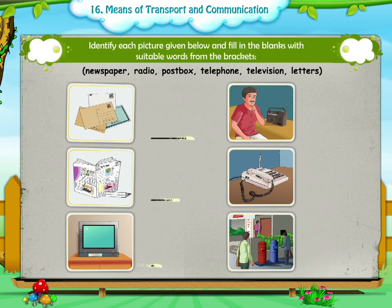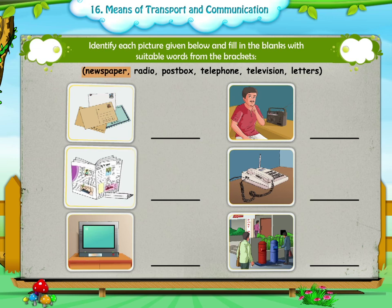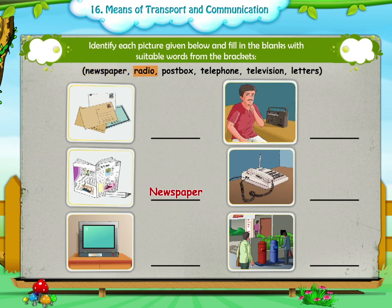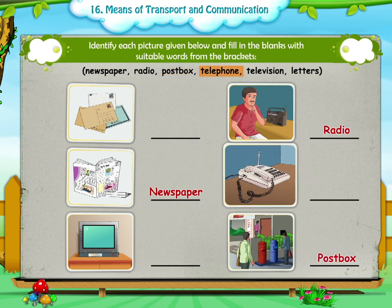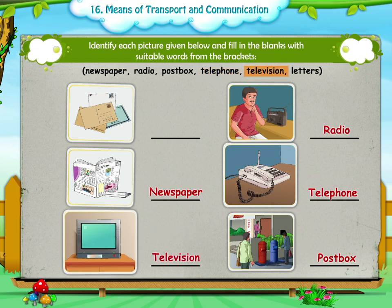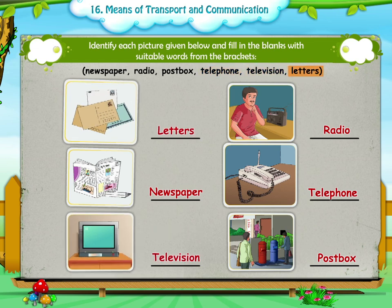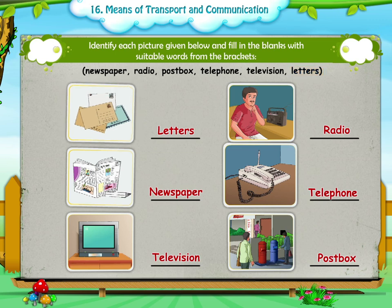Activity Four: Identify each picture given below and fill in the blanks with suitable words from the brackets. The answers are: newspaper, radio, post box, telephone, television, and letters.